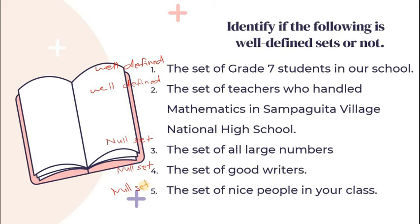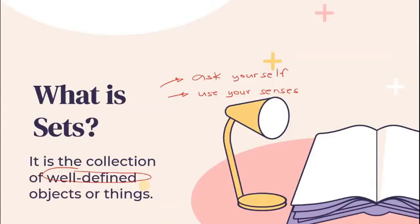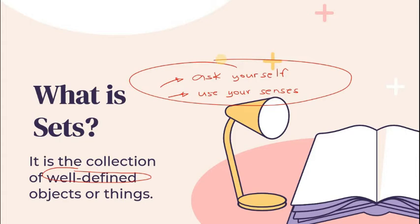Bakit? Ganun din. You ask yourself. Kung para sa akin yung isang tao is a nice person, maaaring sa iba, hindi siya nice. To sum up well-defined sets or null sets, all you have to do is ask yourself — tanungin yung sarili kung siya ba ay acceptable para sa lahat. Kapani-paniwala ba siya para sa lahat or para sa iilang tao lang? If that's the case, maaaring siya ay isang null set. Kung acceptable para sa lahat ng tao, then that is definitely well-defined sets.